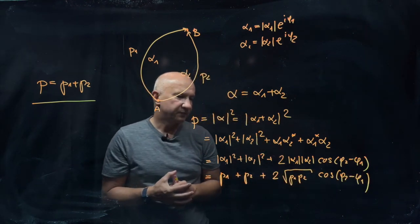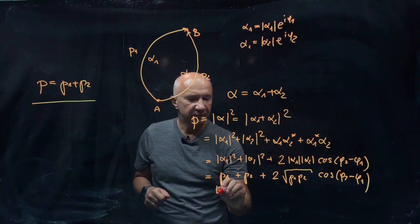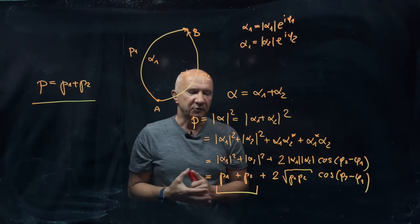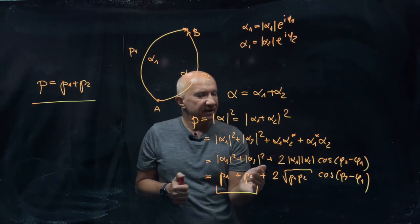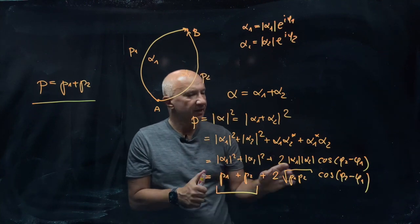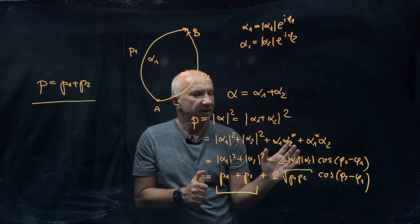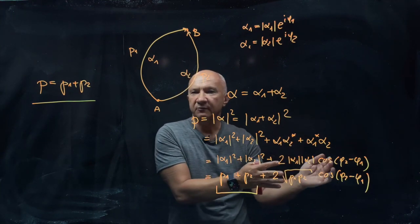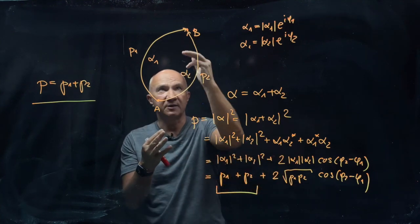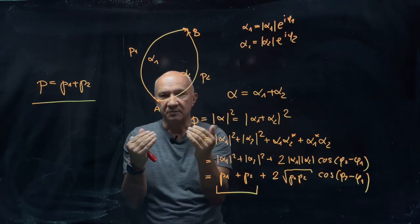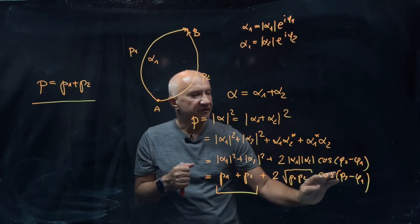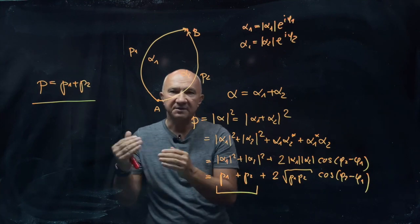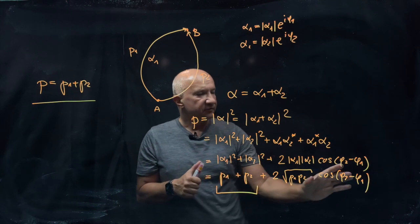We can recognize the first two terms, p1 plus p2, as something familiar — that's the classical part, what classical probability theory tells you to add. But there's more: quantum theory adds one extra expression, called the quantum interference term. This interference term can be both positive or negative because the cosine ranges from minus one to plus one. Therefore the interference term can enhance the probability for the system to go from A to B, or depending on the phase difference, can actually diminish this probability. The phase factors involved control the degree to which we can enhance or reduce the probability compared to the classical part.